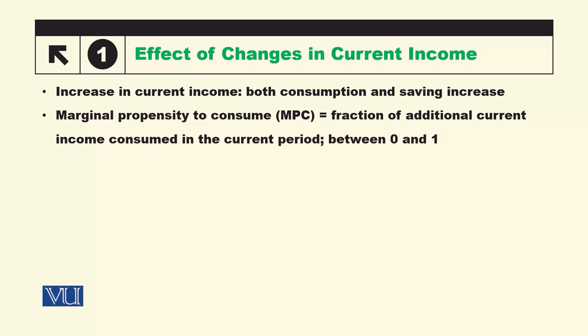If MPC is 1, it means that change in Y equals change in C — whatever increase occurred in income, all of it was spent on consumption. If MPC is 0, it means whatever increase occurred in income, all of it was saved. So usually it lies between 0 and 1. For example, if MPC is 0.7, it means when income increases by 1 unit, 70% of that increase will be used for consumption and the remaining 30% will go to saving.